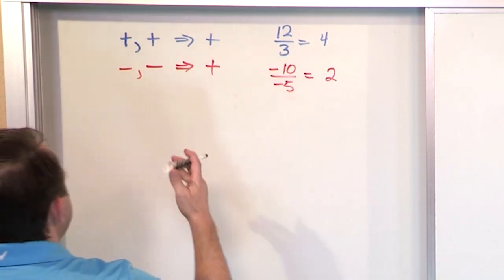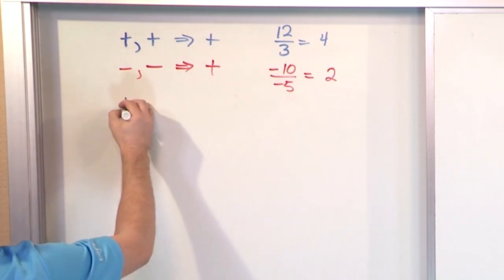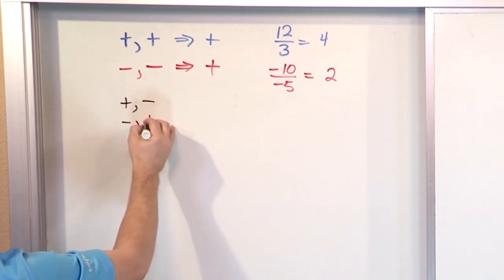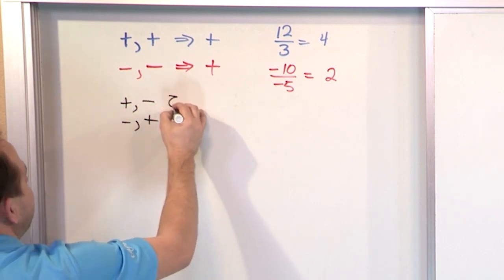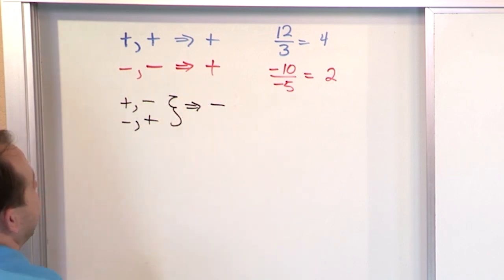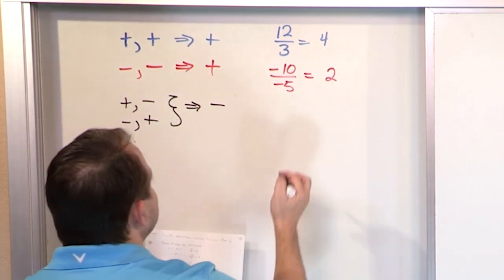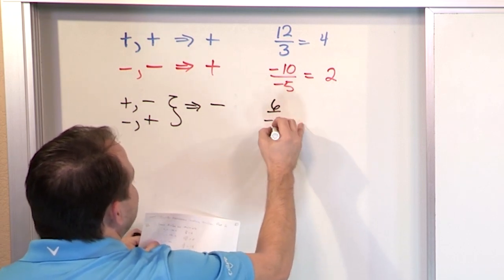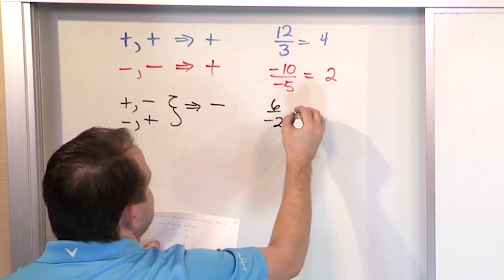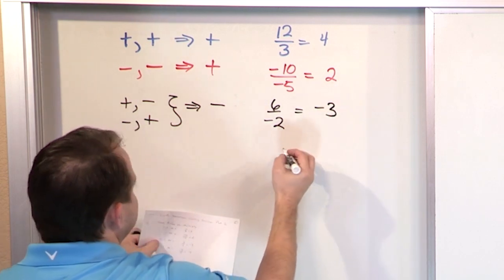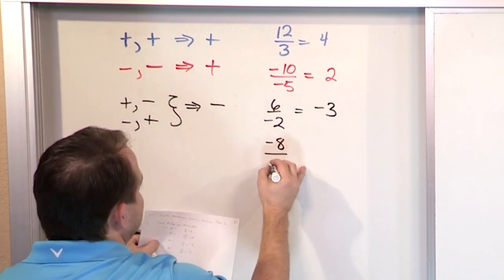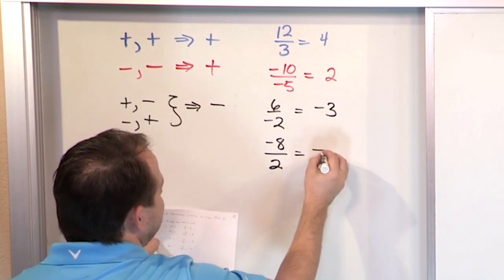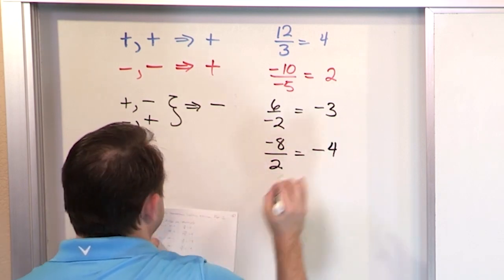Now let's switch it up a little bit. What if you have a positive numerator and a negative denominator, or a negative numerator and a positive denominator? In both of these cases, you always get a negative answer. So for example, 6 divided by negative 2 gives you negative 3. And negative 8 divided by positive 2 gives you the same thing — a negative number, negative 4.